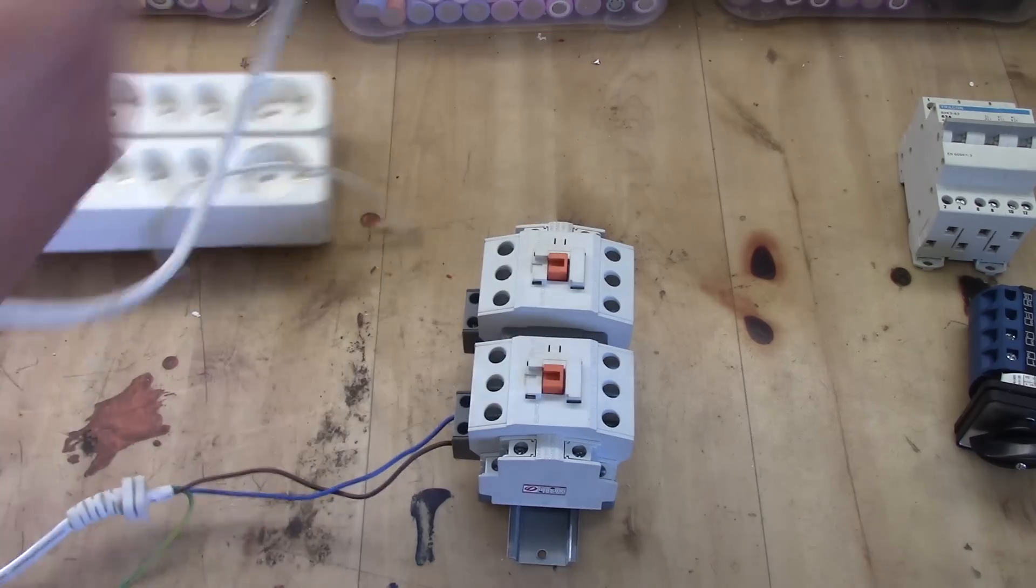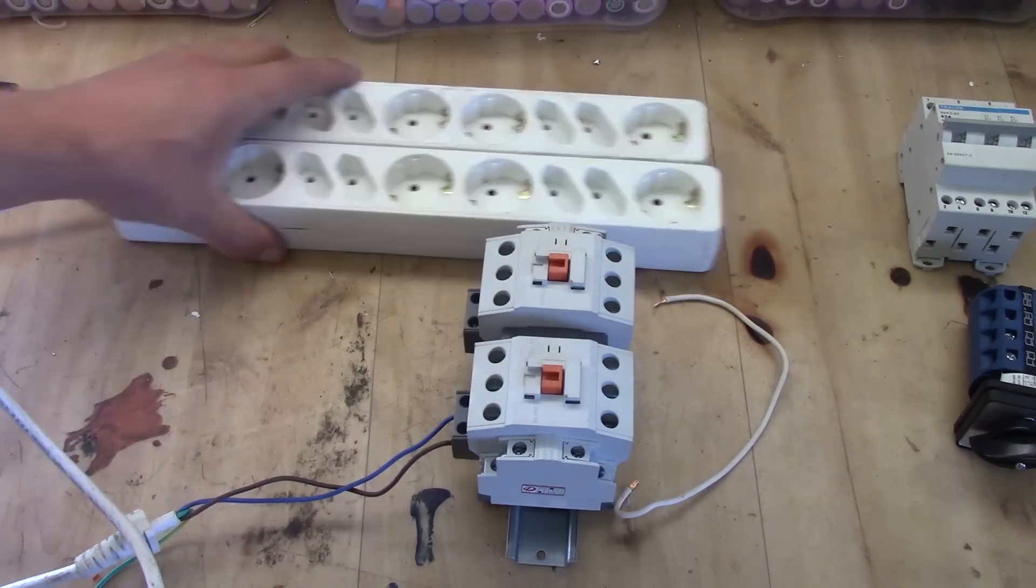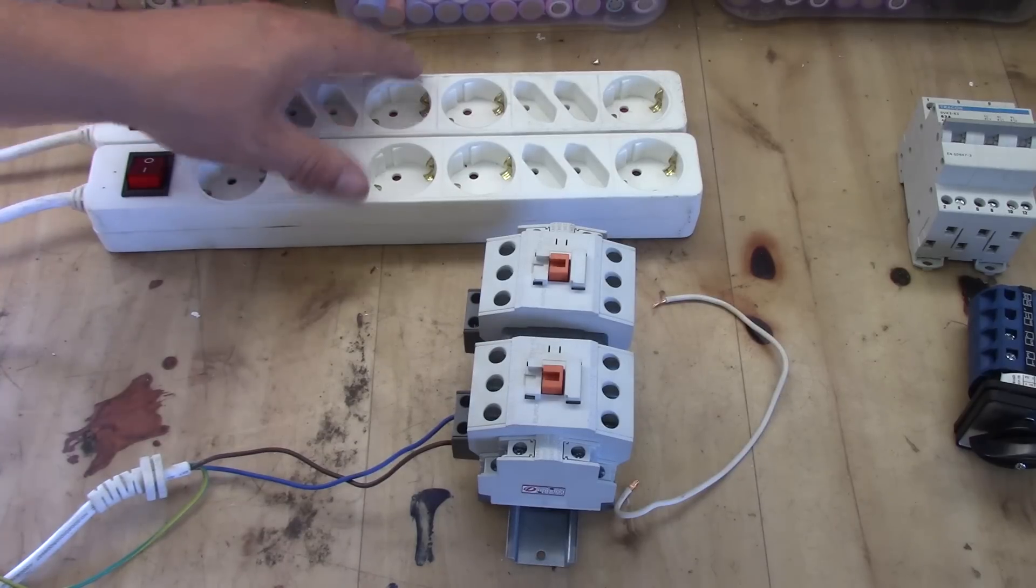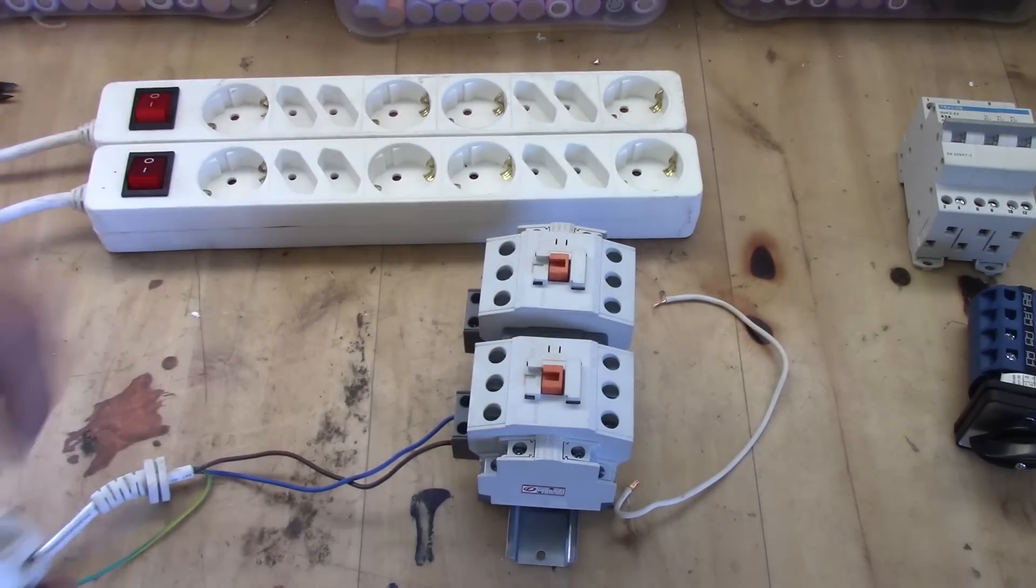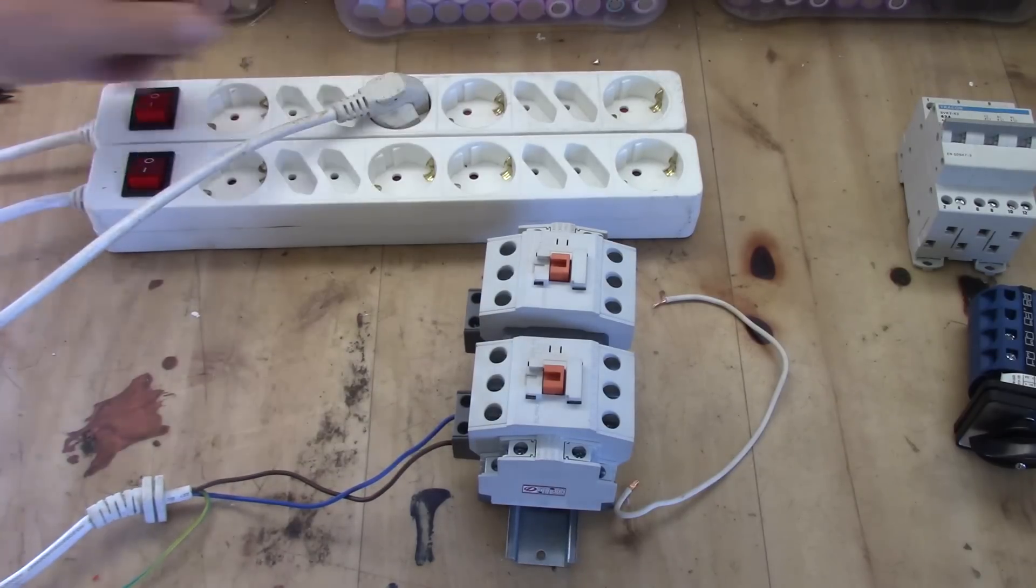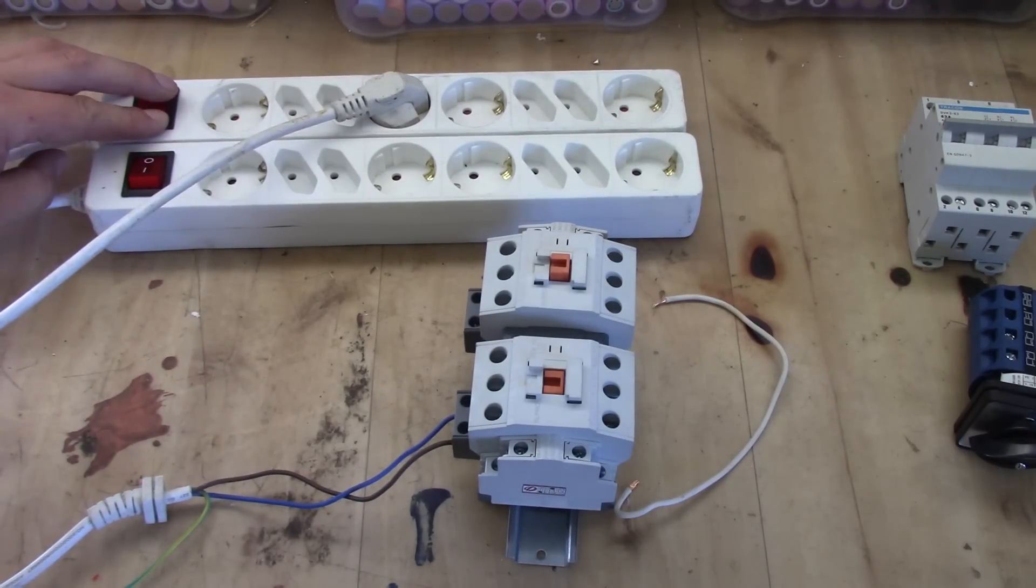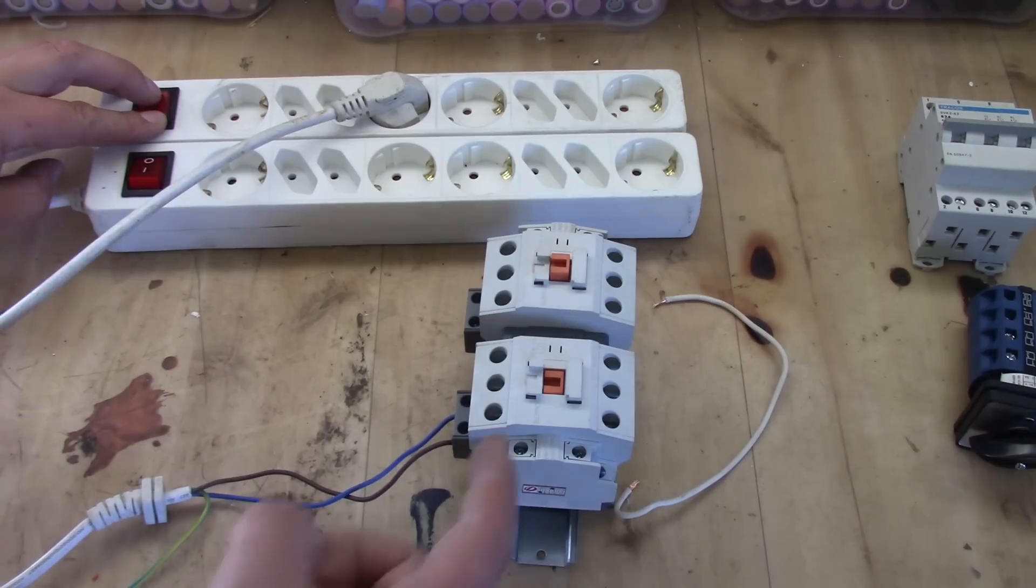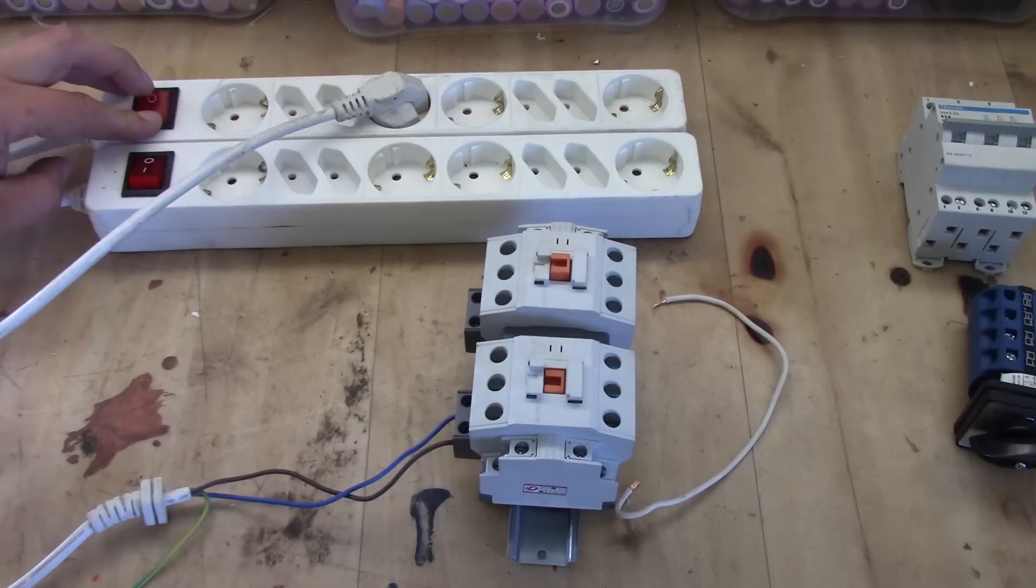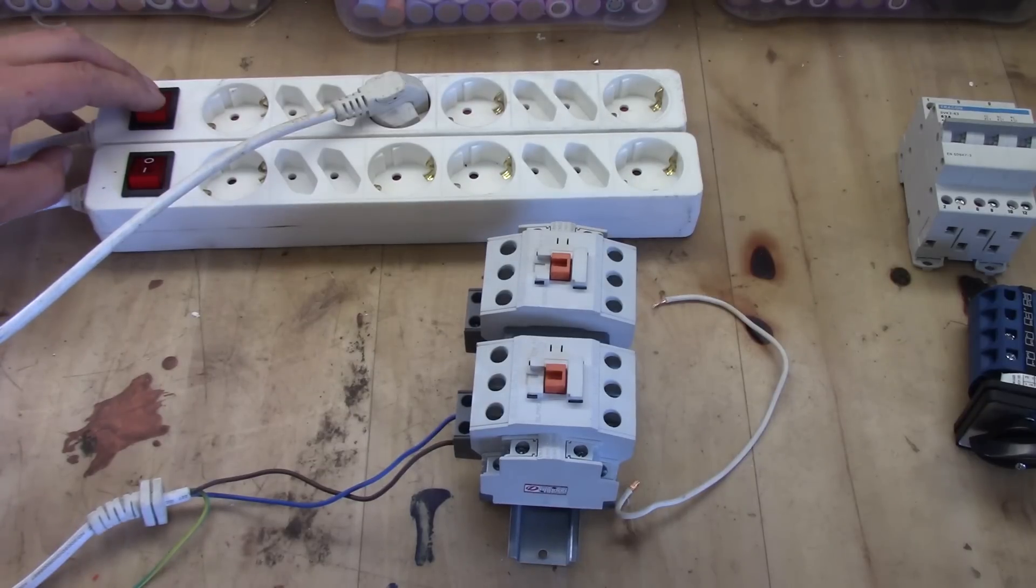And I have those here. They will simulate the incoming from grid and from solar. They are both turned off. So let's hook this up and we turn this on. And as you can see, this contactor now shuts on. So this is the first step.